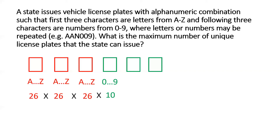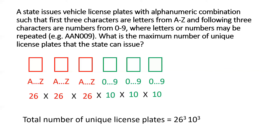For the second green placeholder, that also has to be filled by a number, and since repetition of numbers is allowed, we can consider any one number from 0 to 9 regardless of whatever number was used in the first green placeholder. So the second green placeholder can also be filled in 10 different ways, and so on for the third green placeholder. Considering all six placeholders, they can be filled in 26 multiplied by 26 multiplied by 26 multiplied by 10 multiplied by 10 multiplied by 10 — that's 26 cubed multiplied by 10 cubed.